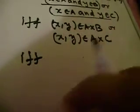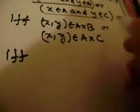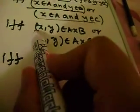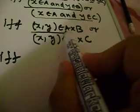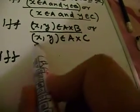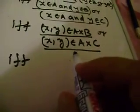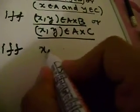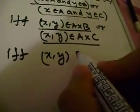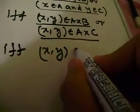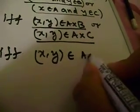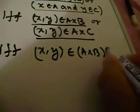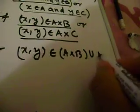Well, we're almost done here. So, now if the ordered pair X, Y belongs to A cross B or A cross C, it must also belong to the union of A cross B and A cross C.